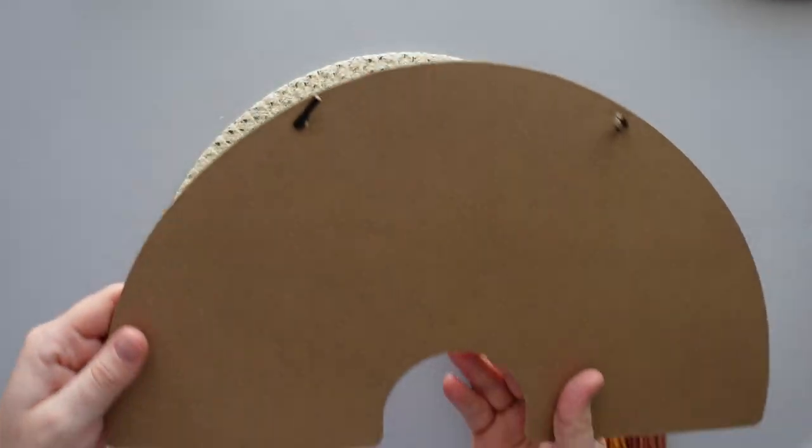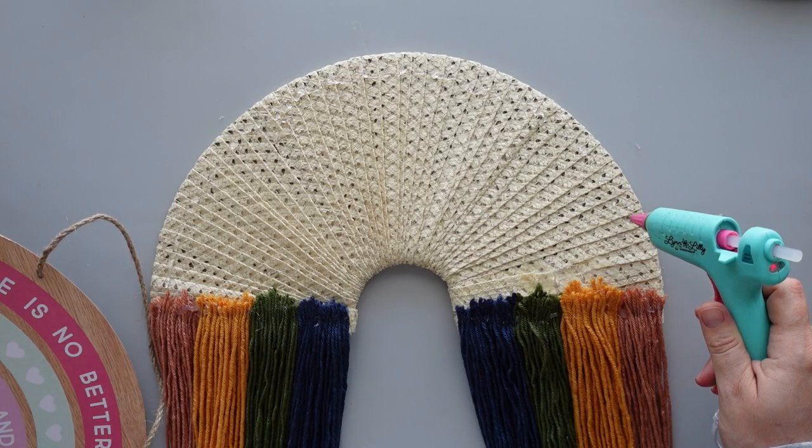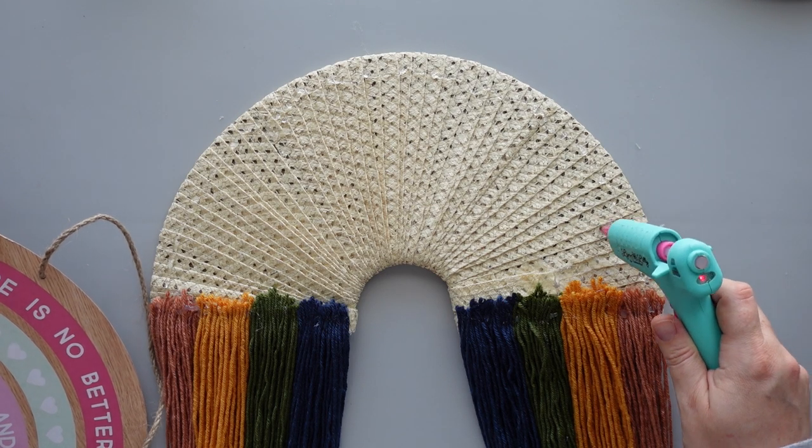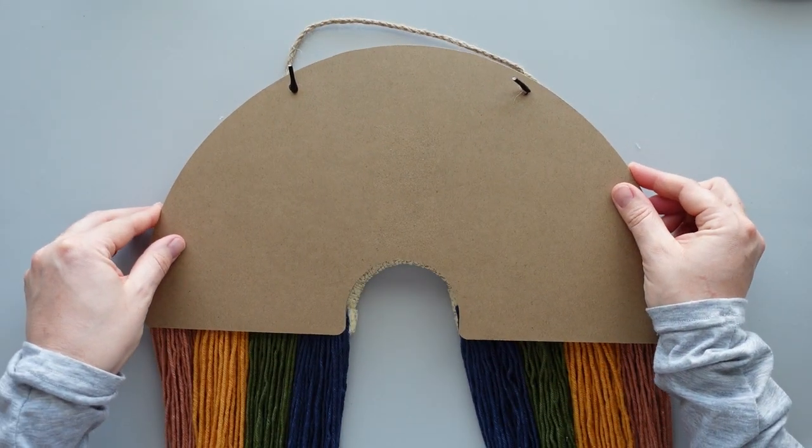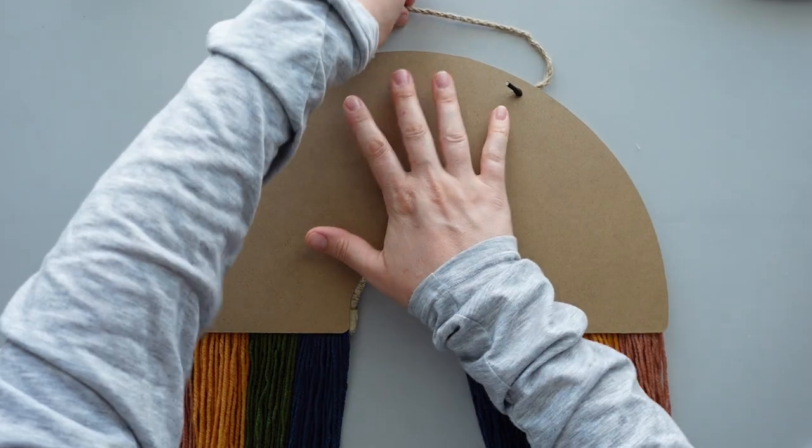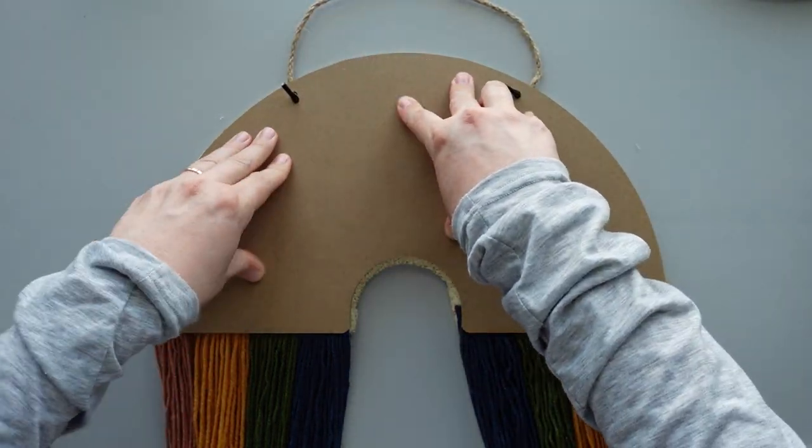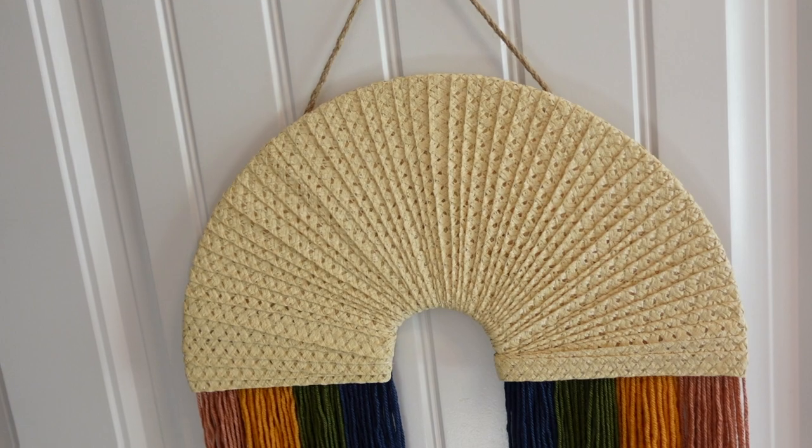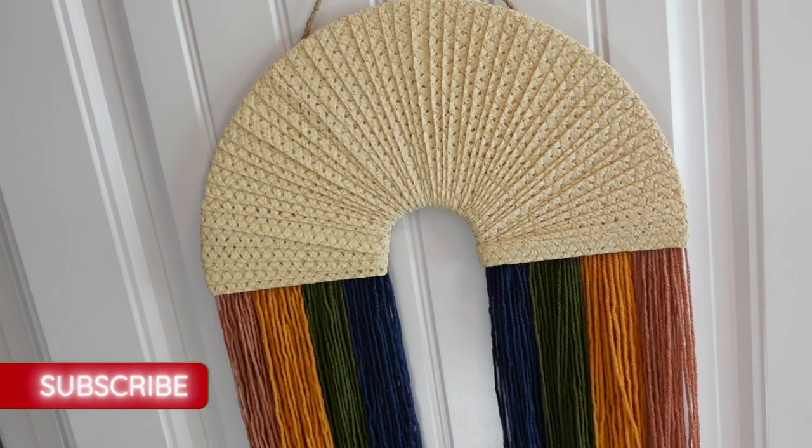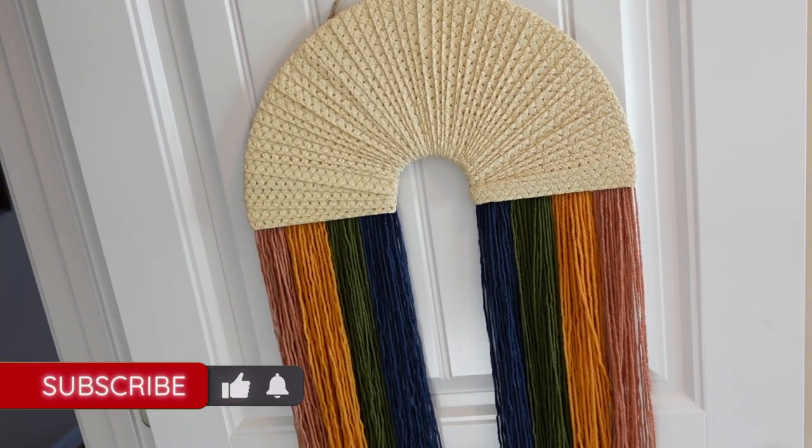Once all of the yarn was secured, I used hot glue to attach another rainbow to the back to make it more polished. And that was it for this adorable door hanger. If you're a fan of Dollar Tree DIYs, please let me know by subscribing and hitting the thumbs up button.